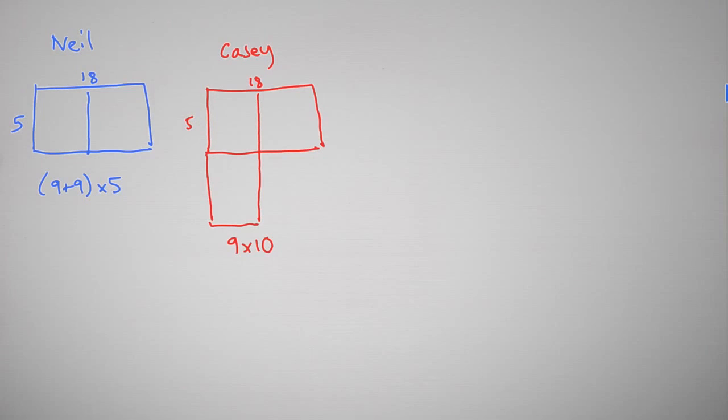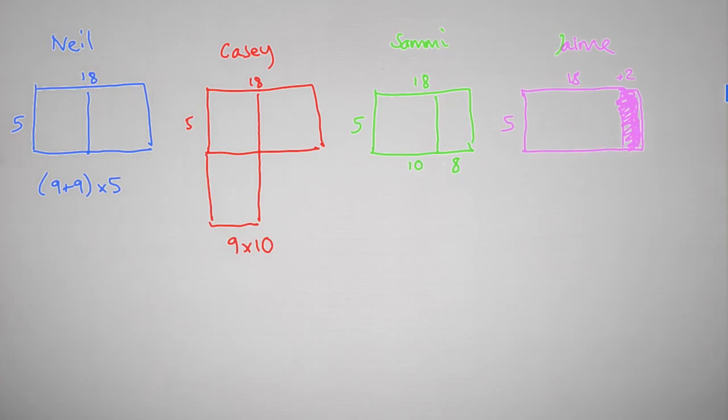I might represent Neil's method. He didn't work out 18 times 5. He worked out 9 times 5 and 9 times 5 in this way. Whereas Casey divided her 18 into 9 and multiplied the 5 by 2 to make it 10. So she worked out 9 times 10, which I might represent in this way. Sammy broke the 18 into 10 and 8 and multiplied it that way. Whereas Jamie made the 18 into a 20 and then subtracted the extra 2 times 5, which I would represent in that way.